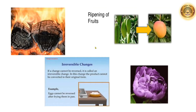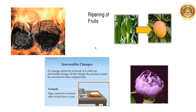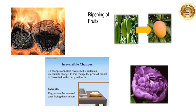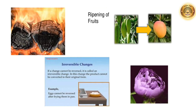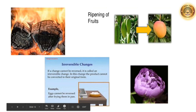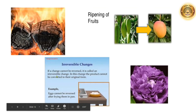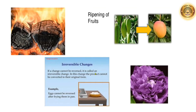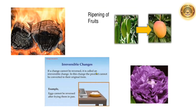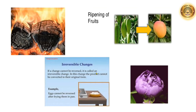The changes you see over here are irreversible changes. Wood cannot be obtained from the ash formed on burning the wood. A ripe mango cannot be transformed back into a raw mango. Eggs cannot be reversed after frying them in a pan. All these are examples of irreversible changes. That is, if a change cannot be reversed, it is called an irreversible change. In this change, the product cannot be converted to its original form.